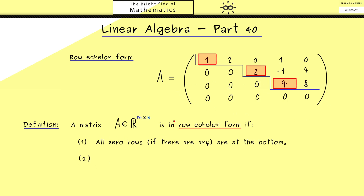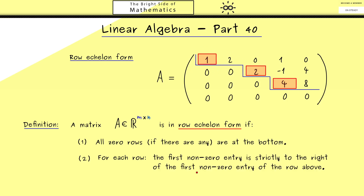The second condition is that when we go one row below, we want a step. Therefore, for each row the first non-vanishing entry must be strictly to the right of the first non-vanishing entry of the row above. Here 'first' means we look from the left-hand side — for each row we start at the left and go to the right to find the first non-zero entry.